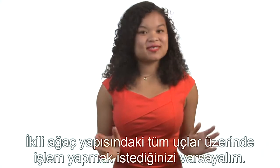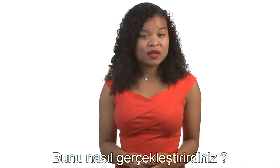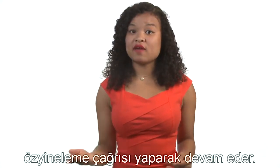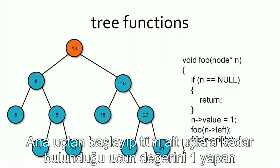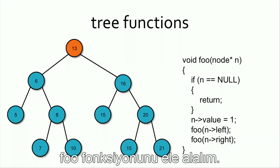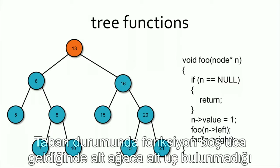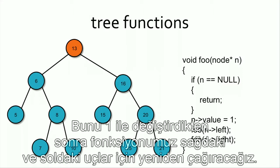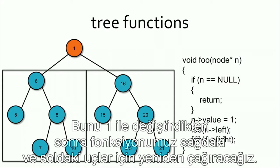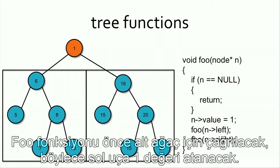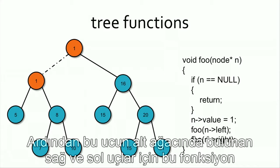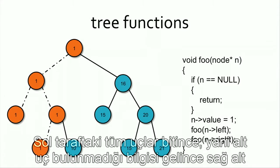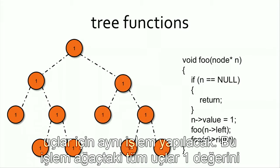Say you want to perform an operation on every single node in a binary tree. You could write a recursive function that performs the operation on the parent node and makes recursive calls passing in the left and right child nodes. For example, this function foo changes the value of a given node and all of its children to 1. The base case of a null node causes the function to return, indicating there aren't any nodes left in that subtree. The first parent is 13 — we change the value to 1 and call the function on the left and right. The left subtree is processed first, and so on, until the whole tree's nodes are reassigned to 1.